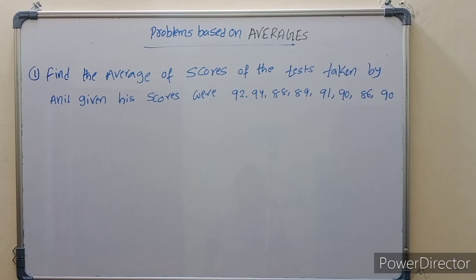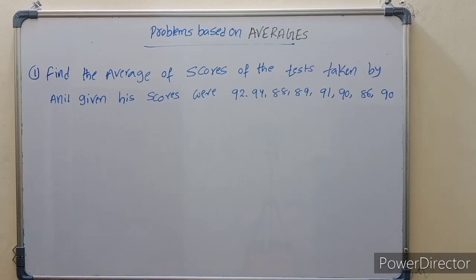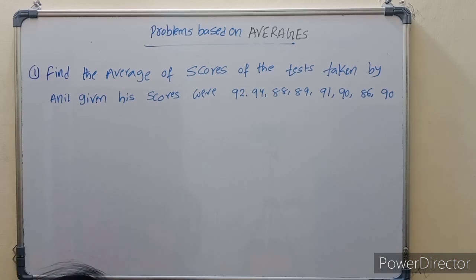First problem: find the average of scores of the test taken by Anil, given his scores: 92, 94, 88, 89, 91, 90, 86, 90.